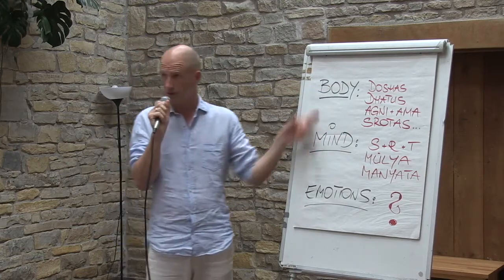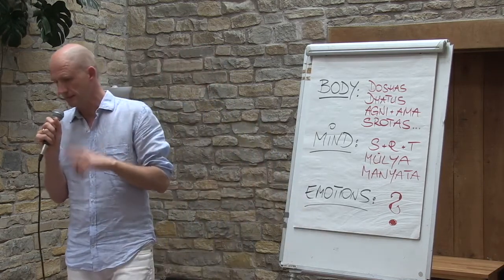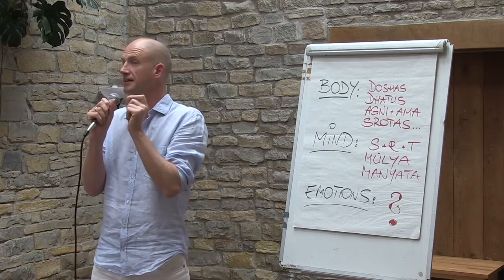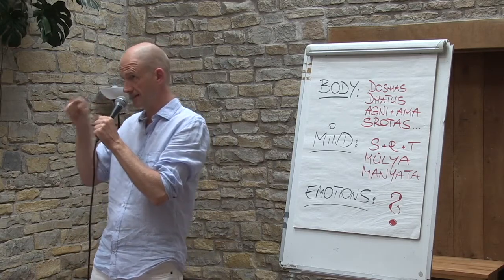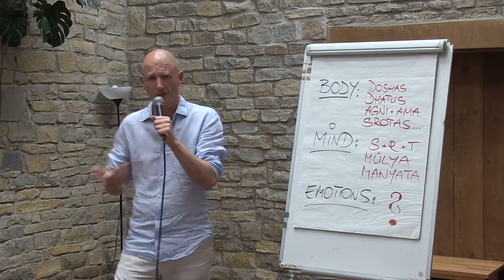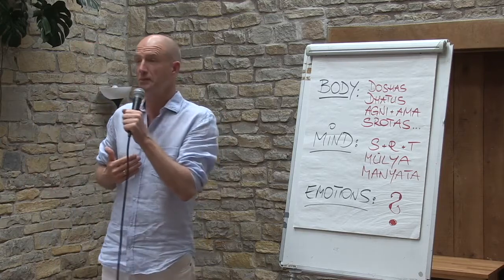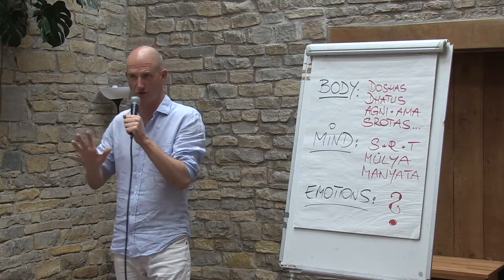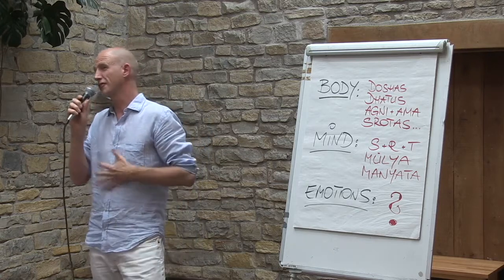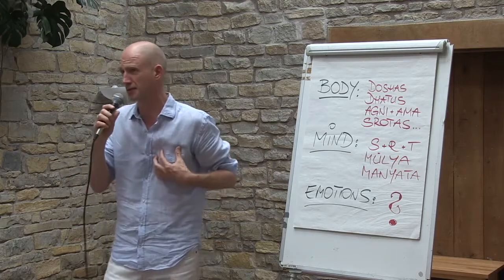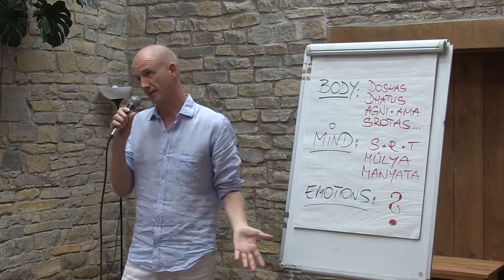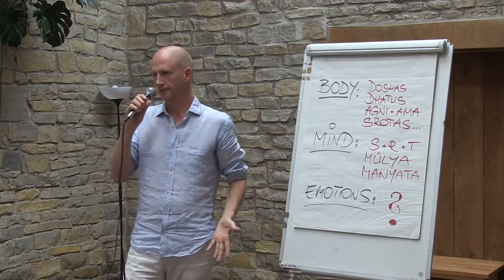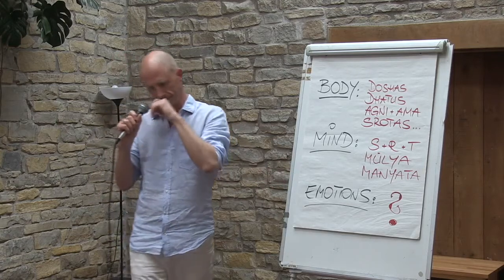Most people come to us with diseases or imbalances — by the time something has happened, the body is already struggling. They come with something physical. So how do we understand how body, mind and emotions work together in a context of disease? What's the purpose of disease? In order to answer that, it's important to understand what's the purpose of health, and that leads us to: what is the purpose of life? In Ayurveda it's said the aim is liberation — moksha, merging back with oneness. But if that's the ultimate goal, why do we take a body at all?